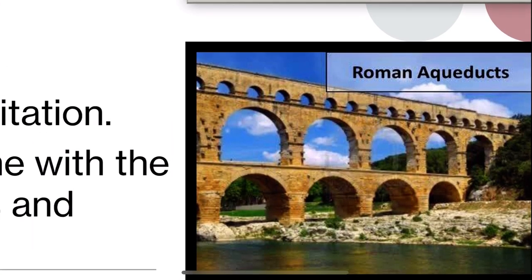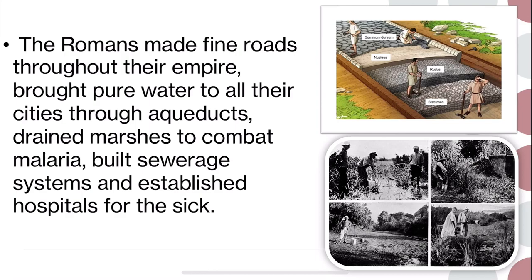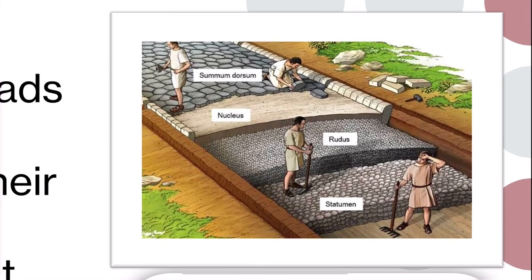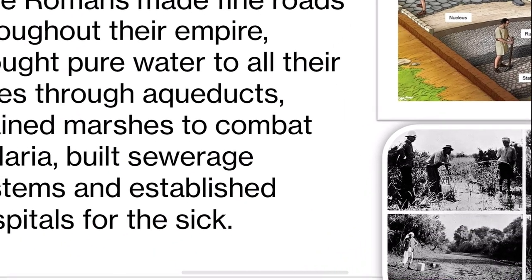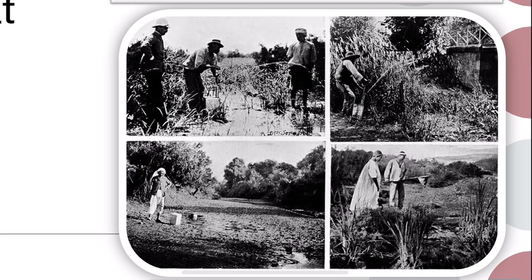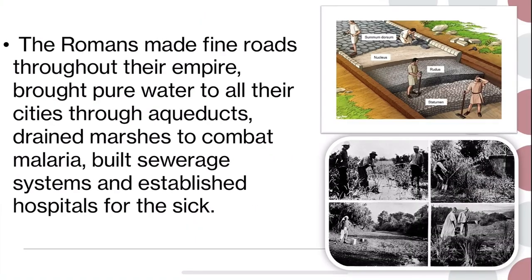An aqueduct is a channel or pipe — the tunnels and canals we use today — where the Romans brought clean water to society. They made fine roads throughout the empire and were more concerned about roads, sewage systems and sanitation. They brought pure water to cities through aqueducts, drained marshes to combat malaria, built sewage systems, and built hospitals for the sick.